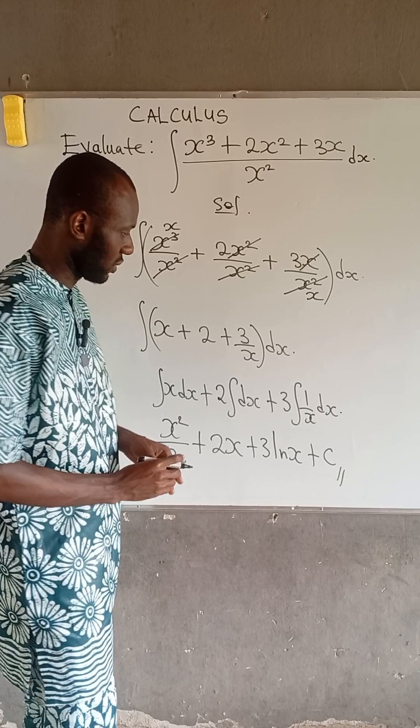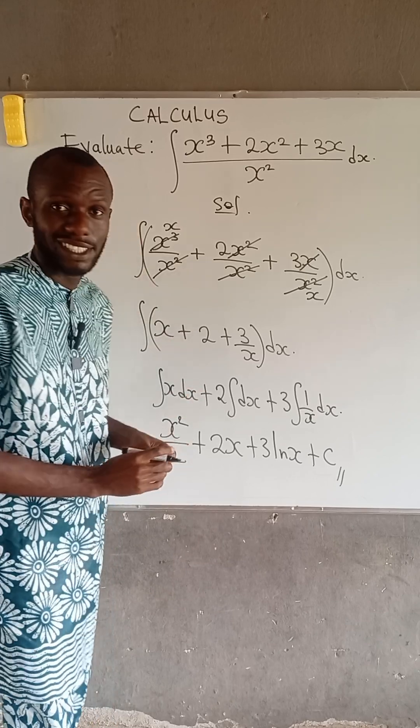Integral of 1 divided by x is ln x. So we have 3 multiplied by ln x plus c. So at this point, we are able to evaluate the integral given to us.